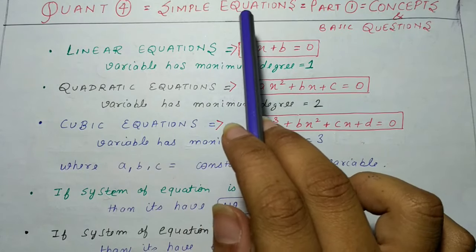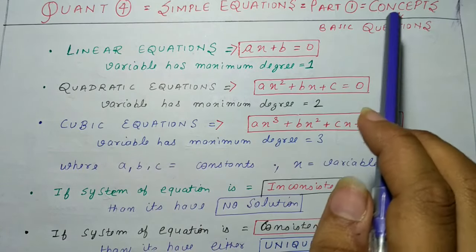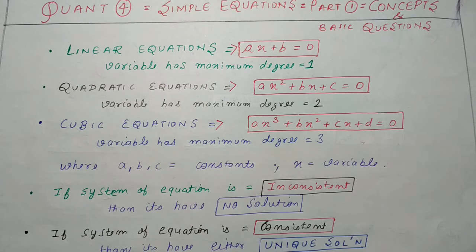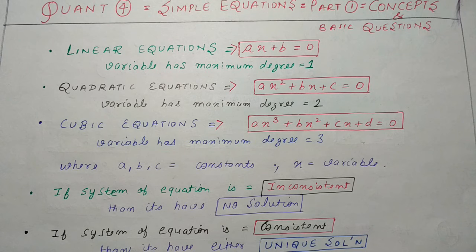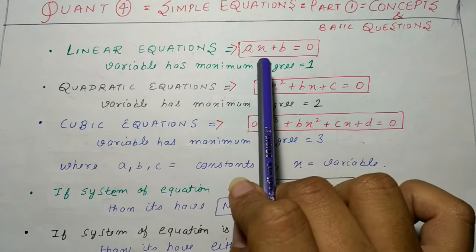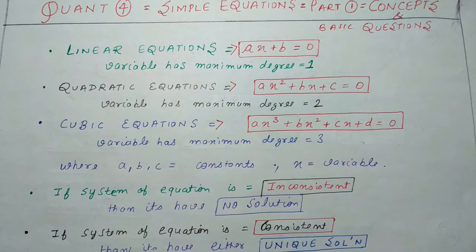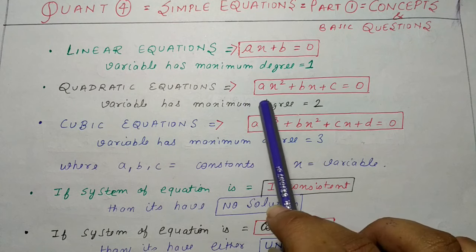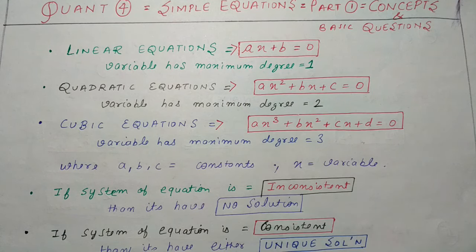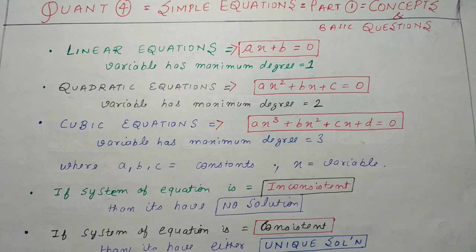The main topic is simple equations and today we will cover its first part - basic questions and concepts. Simple equations की बात करने से पहले, कुछ types of equations की बात करते हैं। Linear equation, quadratic equation, और cubic equation। Linear equation को represent कर सकते हैं ax + b = 0 की form में। Quadratic equation होती है ax² + bx + c = 0 की form में, और cubic equation होती है ax³ + bx² + cx + d = 0 की form में।